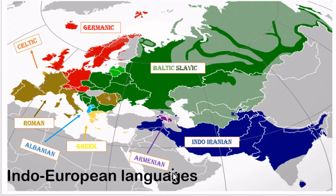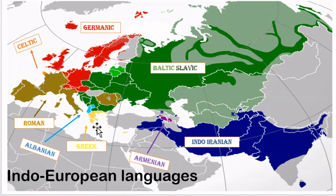Finally, looking again at the Indo-European families: Baltic-Slavic covering a large green area, Germanic in red, Celtic surviving in very small areas, Romance languages in their respective parts of Europe, Greek spoken in Greece and the Mediterranean islands, Albanian in a small region, Armenian near Turkey, and Indo-Iranian covering much of India and Sri Lanka — all together forming the huge Indo-European family of languages. Thank you, I hope you enjoyed the video.